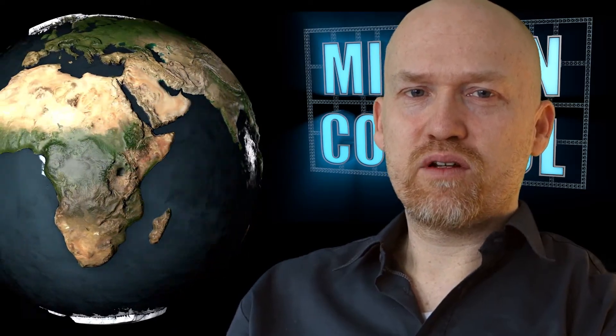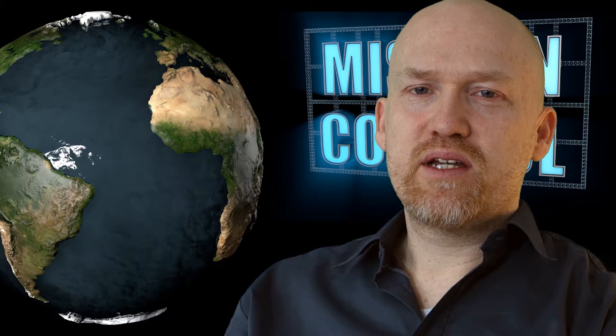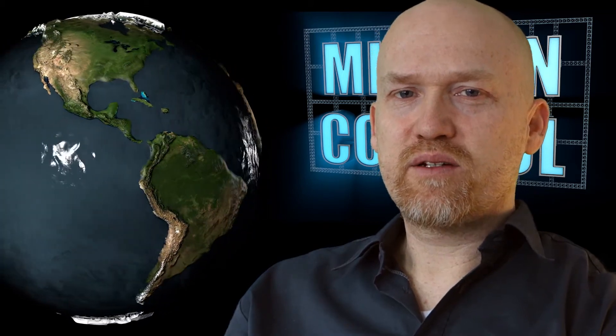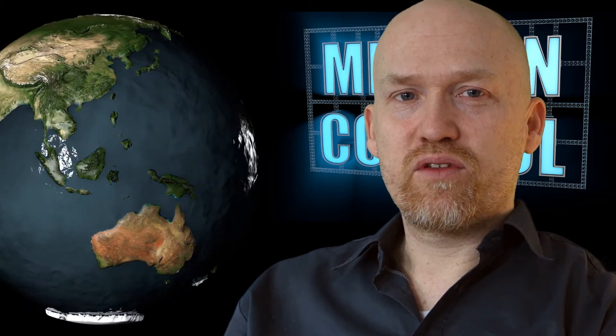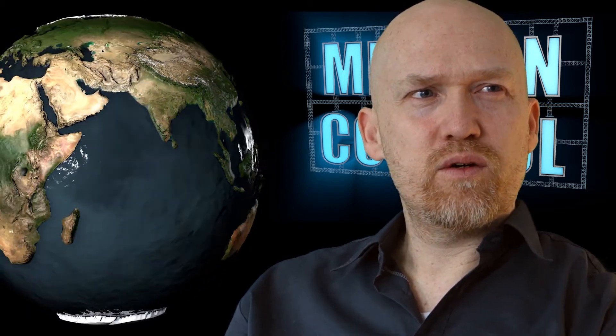Hi and welcome to another episode of Mission Control. Today we're going to take a look at density which flat earthers think is causing things to fall down and the sky is blue because it reflects the color of the ocean.